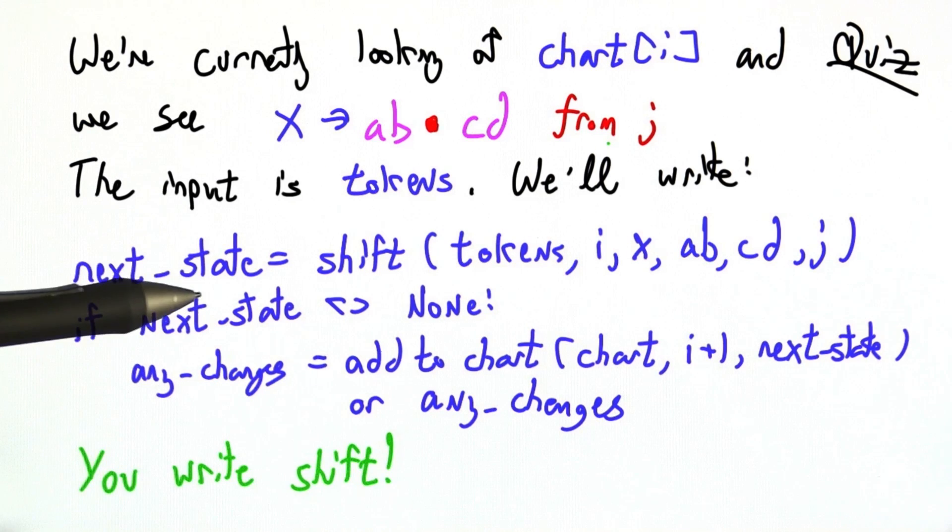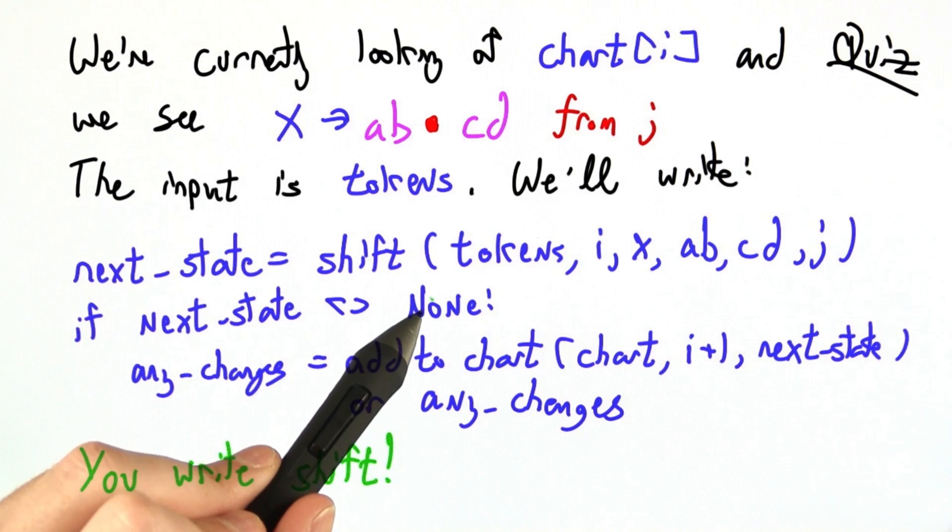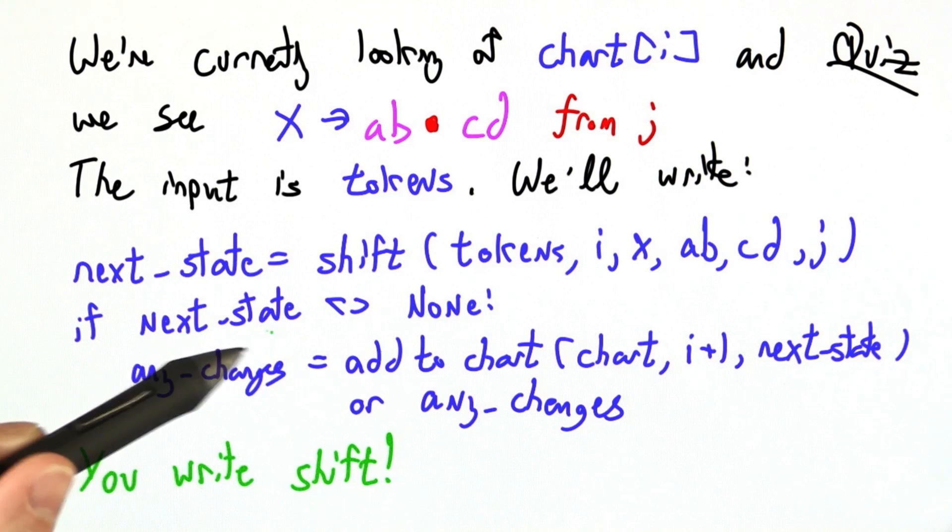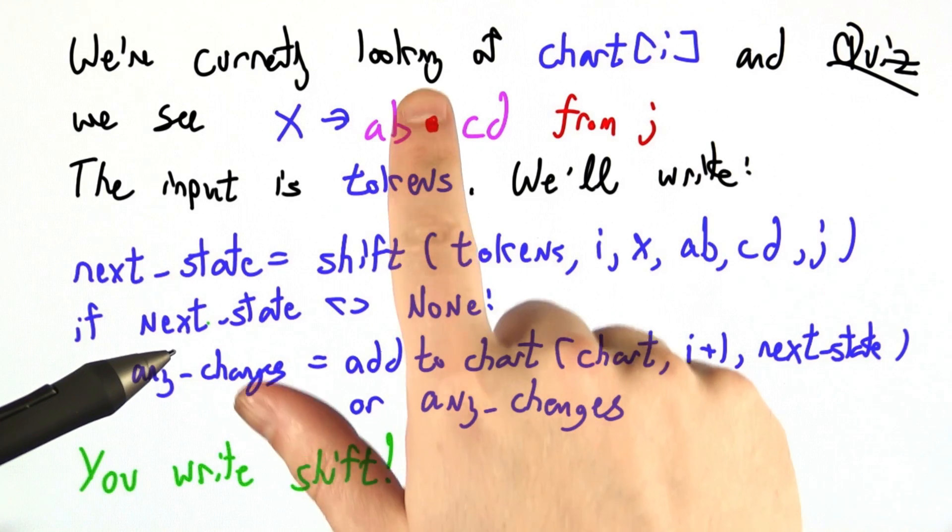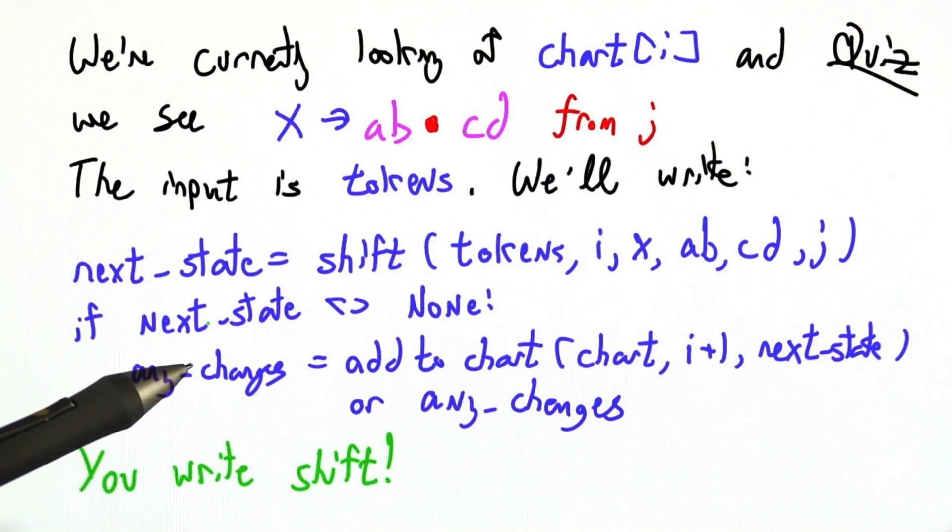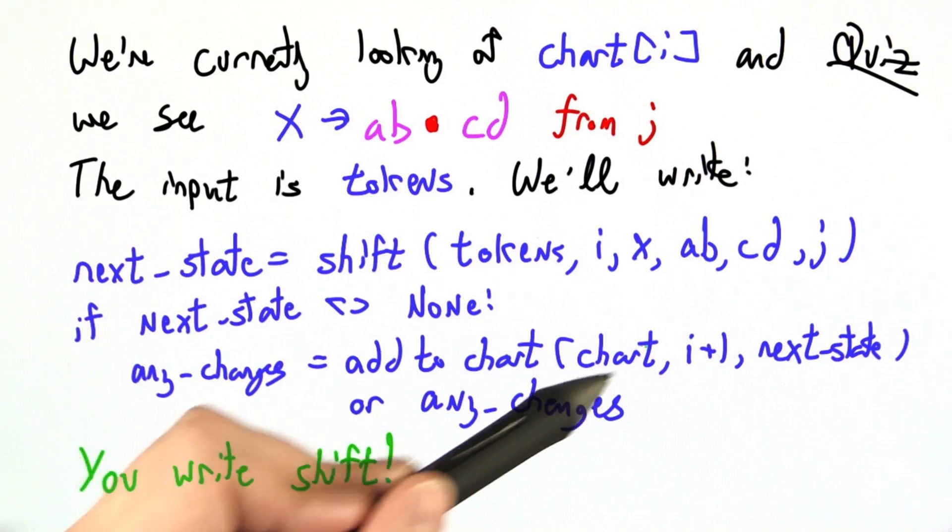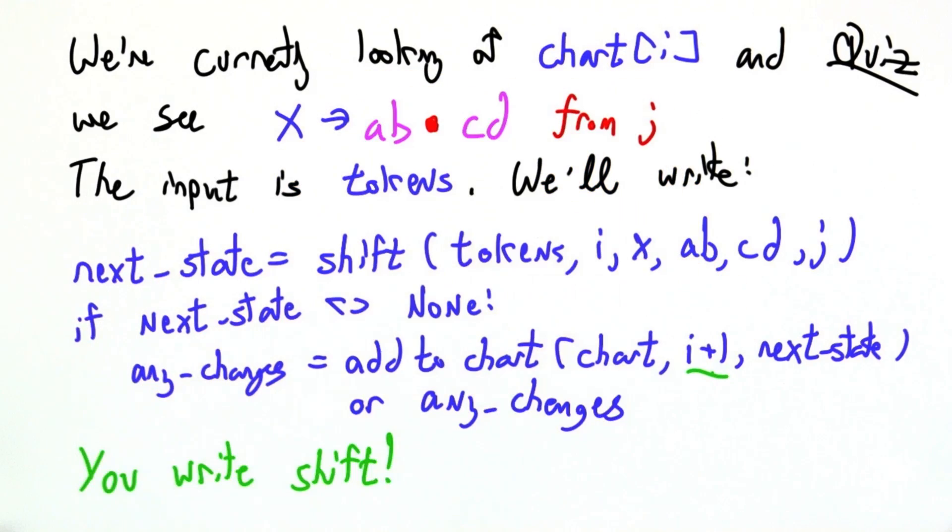And based on that, there may either be a possible shift, or there might not be. So shift will either return none, at which point there's nothing to do, or it will return a single new parsing state that presumably involved shifting over the c, if c matched up with the ith token. So then we'd add that to the chart in position i plus one, the correct place, and we'll keep track of whether there have been any changes. You should write shift.